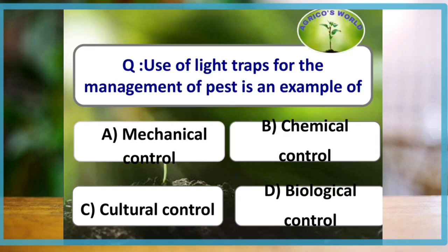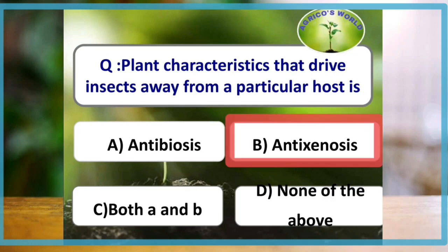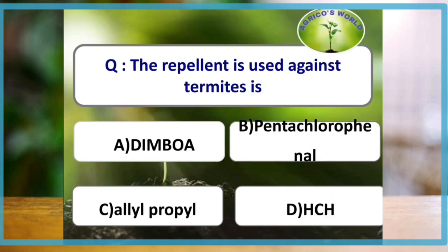Use of light traps for the management of pest is an example of mechanical control. Plant characteristics that drive insects away from a particular host is anti-xenosis. The repellent used against termite is pentachlorophenol.